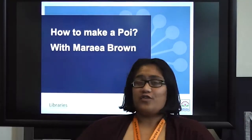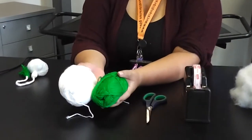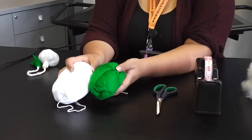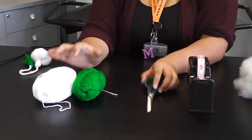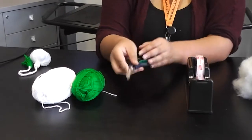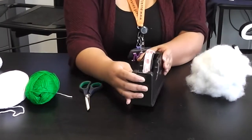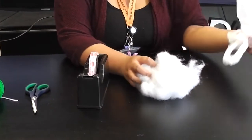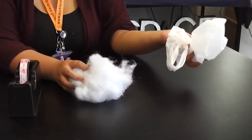So first you'll be needing two different types of wool. It'd be preferable if you had two colours but if you want to use one that's quite fine. You'll also be needing a pair of scissors, some sellotape, some wool of another kind and also a plastic bag. So this is just to keep everything in.